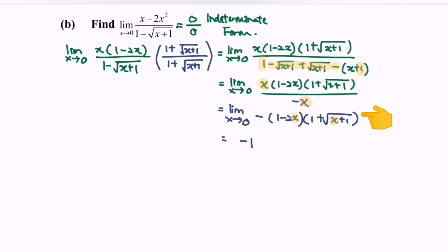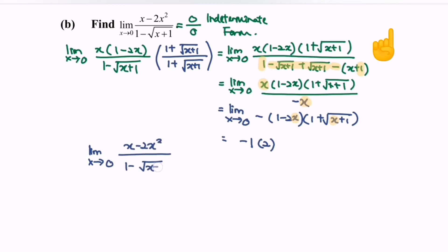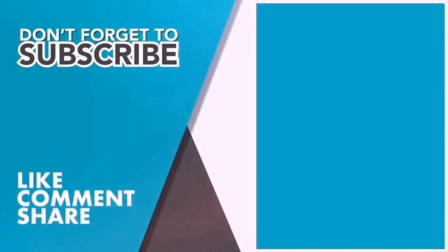So we have negative 1 multiplied by 2, giving us negative 2. Therefore, the limit as x approaches 0 of (x - 2x²) over (1 - square root of (x + 1)) equals negative 2. If you are new here, kindly consider subscribing to this channel and share this video with your friends. Thank you so much for watching. Bye.